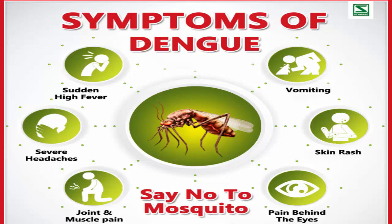There are certain distinct signs and symptoms of dengue fever: high-grade fever, bone pain, joint pain, headache, abdominal pain, nausea, vomiting, and body rashes — that is, red spots on the body. The signs and symptoms range from mild to severe. Those individuals with a strong immune system may have mild symptoms, while those with a weak immune system will have severe signs and symptoms.